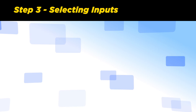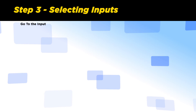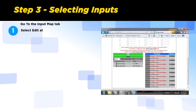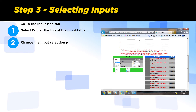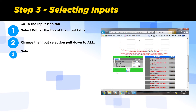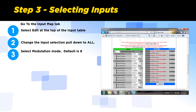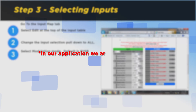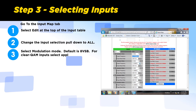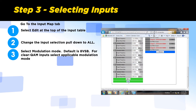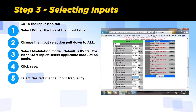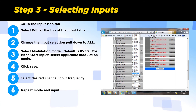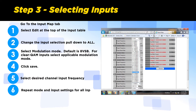Step 3: Selecting inputs. Go to the Input Map tab and select Edit at the top of the input table. Change the input selection pull-down to All. Select the modulation mode — the default is 8 VSB, and in our application we are using 8 VSB mode. For clear QAM inputs, select the applicable QAM modulation mode and click Save. Select the desired channel input frequencies and repeat the modulation mode and input settings for all inputs, then click Save.